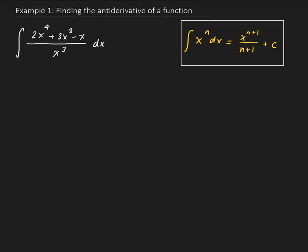In this example, we want to find the antiderivative of the function 2x to the 4th plus 3x cubed minus x, all divided by x cubed.